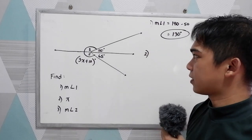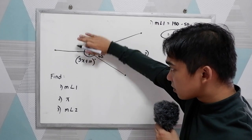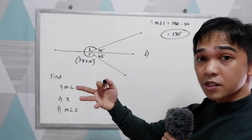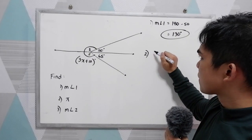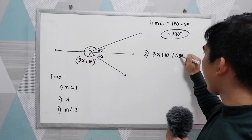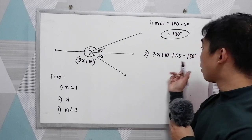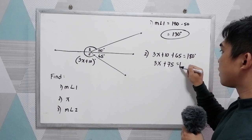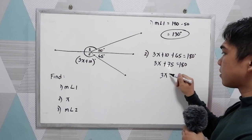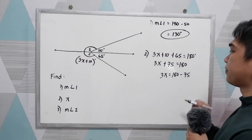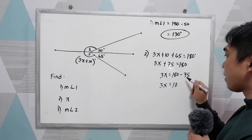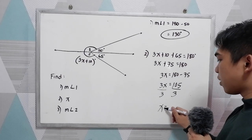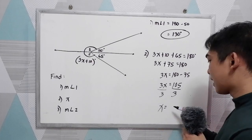Number 2, find x. We have two angles whose sum must equal 180 degrees. So 3x plus 10 plus 65 equals 180 degrees. Combining constants: 3x plus 75 equals 180. So 3x equals 180 minus 75, which is 105. Dividing by 3, x equals 105 divided by 3, which is 35.